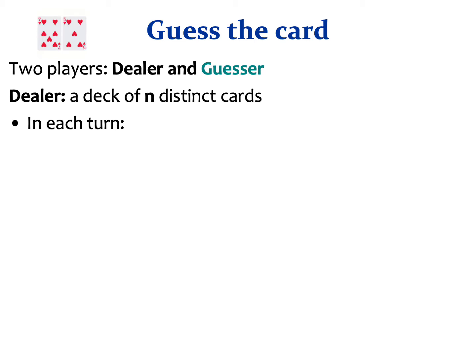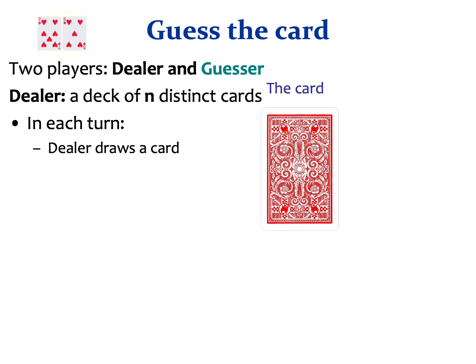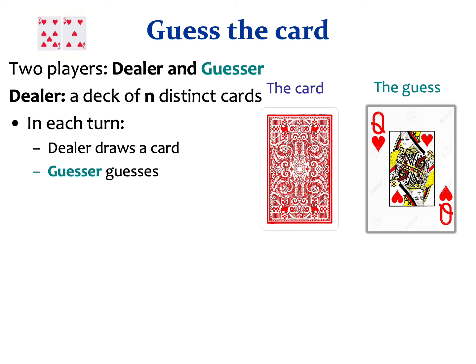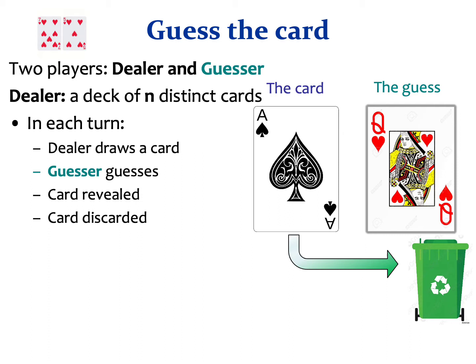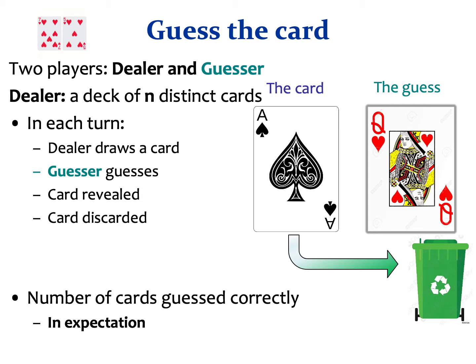Card guessing is a game played by two players, a dealer and a guesser. The dealer begins the game with a deck that consists of N distinct cards. In each turn, the dealer draws a card from the deck and places it face down on the table. The guesser tries to guess which card was drawn; the card is then revealed and discarded so it can no longer be drawn. The guesser gets a point for every correctly guessed card, and we are interested in the expected number of correct guesses.